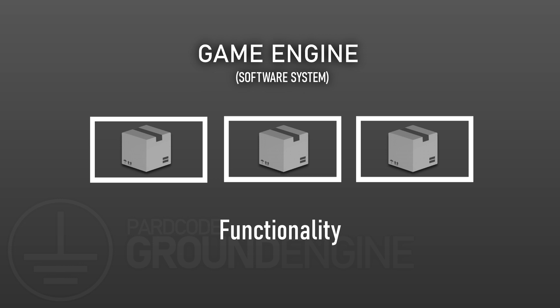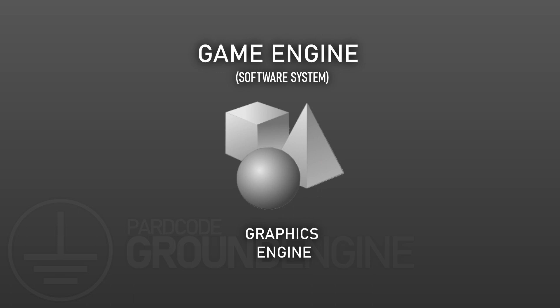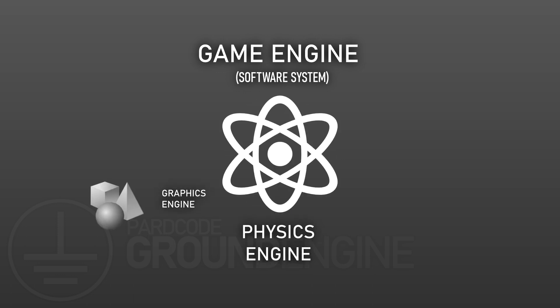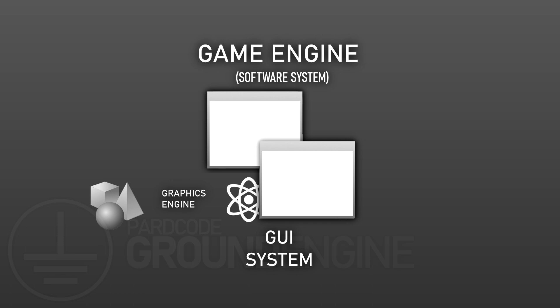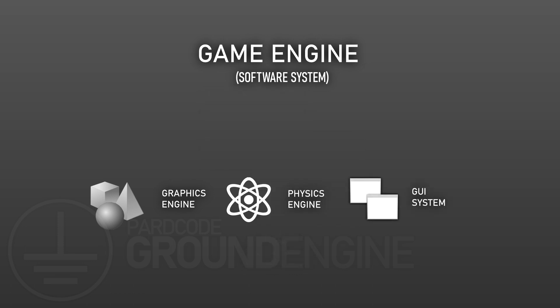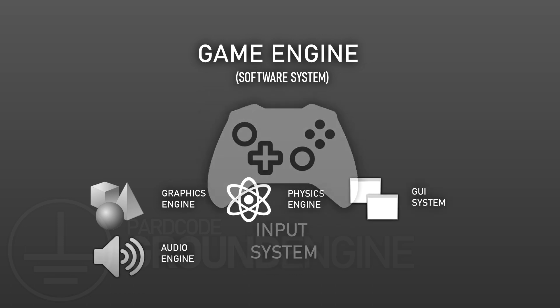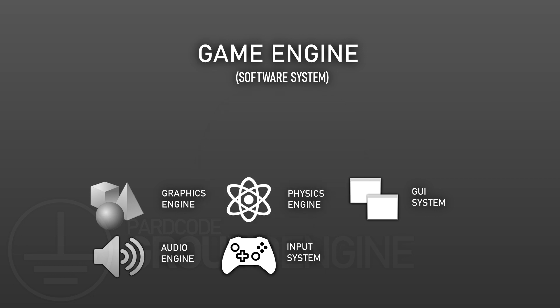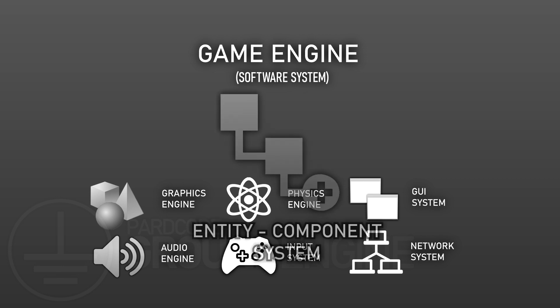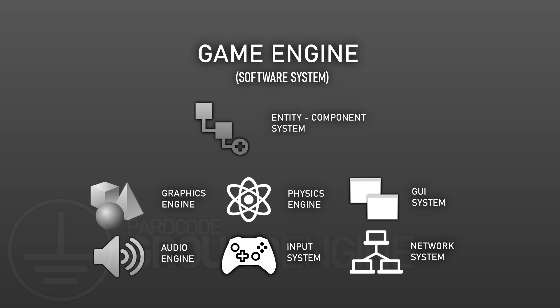Let's see what are the main software components that compose a game engine. We have the graphics engine, the physics engine, the graphical user interface system, the audio engine, the input system, the network system, and last but not least there is the entity component system. This is a really high level view of a game engine architecture and we will face it and all its software components in detail along the series.